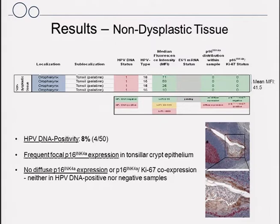In the non-dysplastic tissue, we found HPV DNA positivity in 8% of samples, and we observed frequent focal P16 expression patterns in the tonsillar crypt epithelium. However, in these areas no diffuse P16 expression or P16/Ki67 co-expression was observed, and none of the P16 expression patterns correlated with HPV DNA positivity.